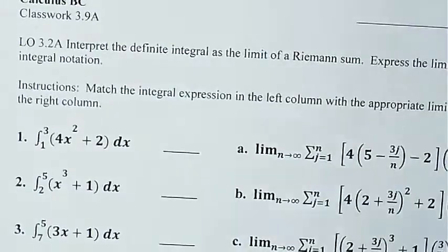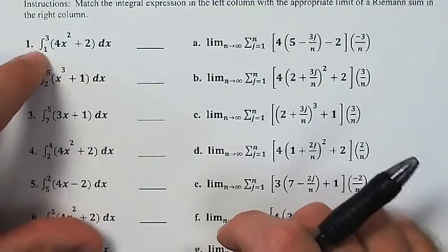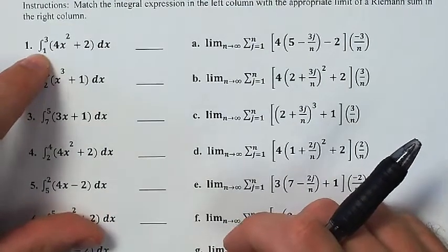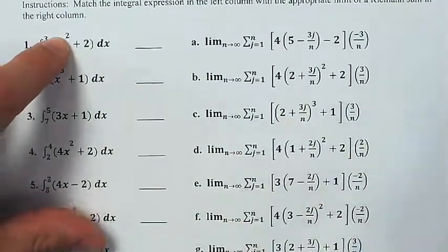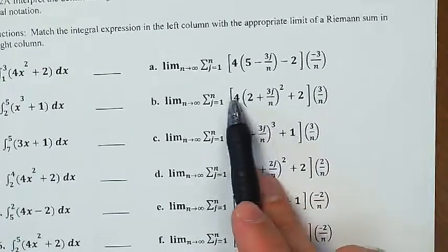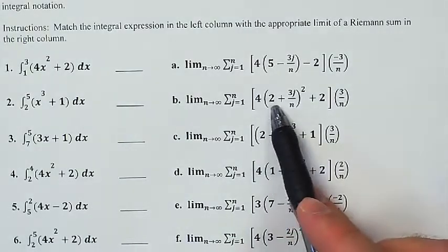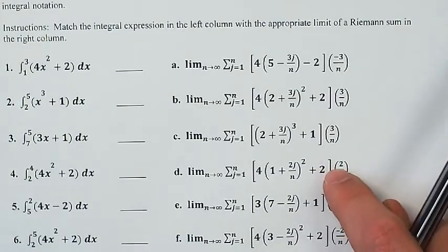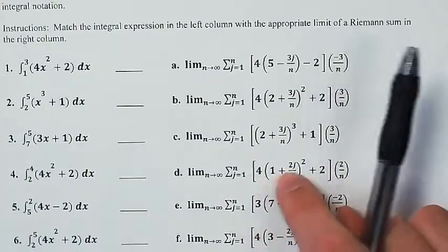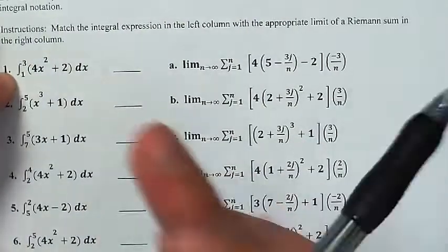So we're looking at this, 4x² + 2 from 1 to 3. I'm looking for something with a width of 2, so I'm looking for 2 over n on the right side and a 4x² + 2. This is a 4x² + 2, but it's not times 2 over n, so whatever that one is, that has a width of 3. So it's going to look pretty much like that. I feel like it could be this one. Yep, 4x² + 2, width of 2, that's 1 to 3, and it starts at 1, this is d.